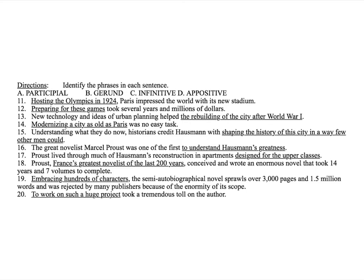Hosting the Olympics in 1924, Paris impressed the world with its new stadium. Alright. Hosting the Olympics in 1924. Hosting is clearly the ing form of a verb used in some other way here. And you ask yourself, what is hosting the Olympics in 1924 doing? It's describing, it's telling us more about Paris. And since Paris is a noun, and it's describing a noun, we call that an adjective. So, this would be a participial phrase, the ing form of a verb used as an adjective.